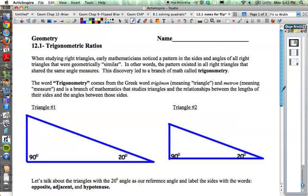Let's take a look here. When studying right triangles, early mathematicians noticed the pattern in the sides and angles of all right triangles that were geometrically similar. In other words, the pattern existed in all right triangles that shared the same angle measures. This discovery led to a branch of math called trigonometry. The word trigonometry comes from the Greek word trigonon, meaning triangle, and metron, meaning measure, and is a branch of math that studies triangles and the relationships between the lengths of their sides and the angles between those sides. We're talking about the relationship between sides and angles, connecting the two together.